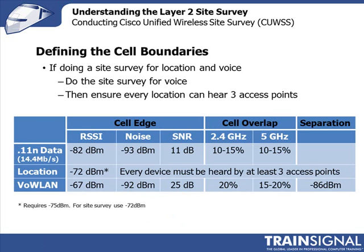If you're doing a deployment for wireless data, we saw that if you want 14.4 Mbps on your cell edge with a 20 MHz channel, your received signal strength should be -82 dBm. But for voice networks, you need -67 dBm. For a data network, you need a signal-to-noise ratio of 11 dB, whereas for voice you're looking at 25 dB. There's a real need to maintain a much stronger signal and a much higher ratio over the noise floor in order to maintain a quality voice call.